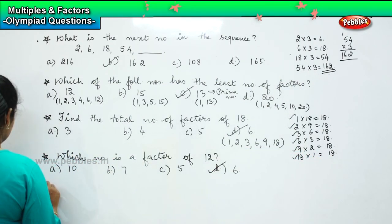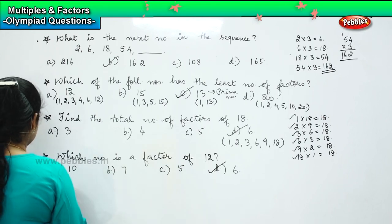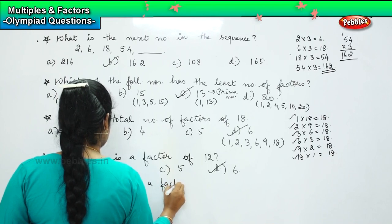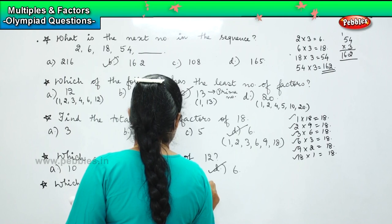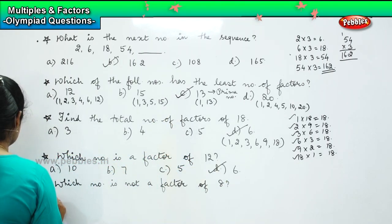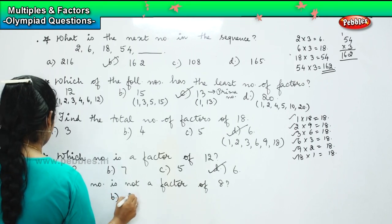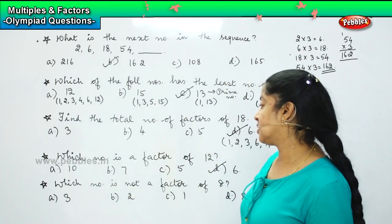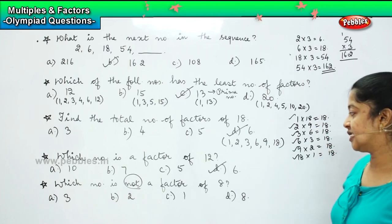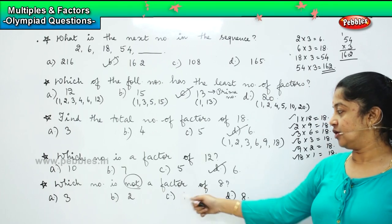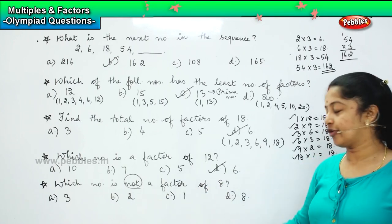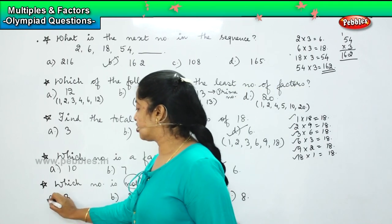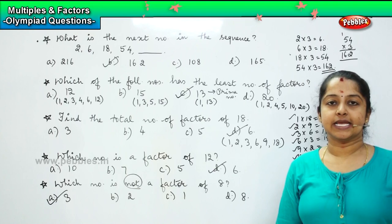The next question says: which number is not a factor of 8? The options are: Option A, 3. Option B, 2. Option C, 1. And Option D, 8. Is it possible to divide 8 by 3? No. Is 2 a factor of 8? Yes. 1 is a factor of 8. 8 is a factor of 8. So Option A, 3, is not a factor of 8 — Option A is the right answer.